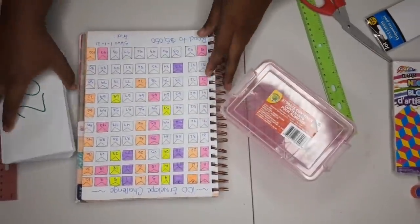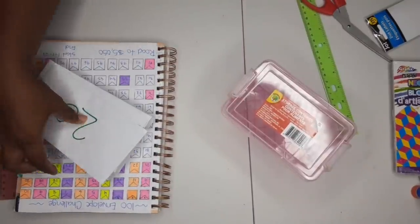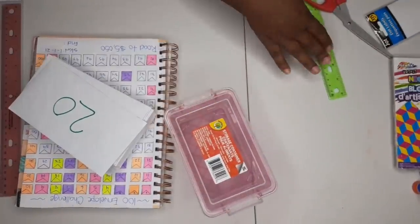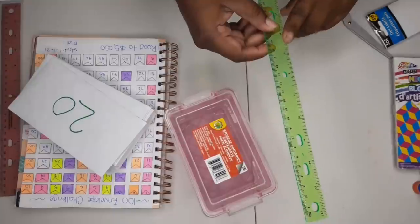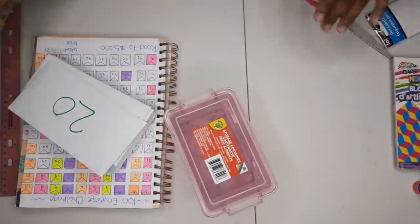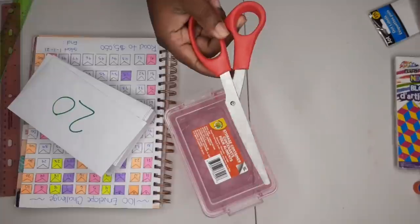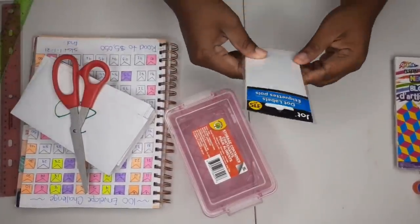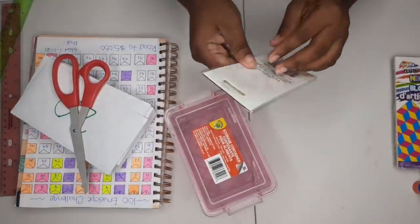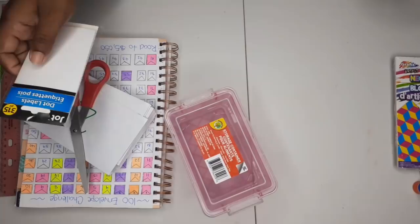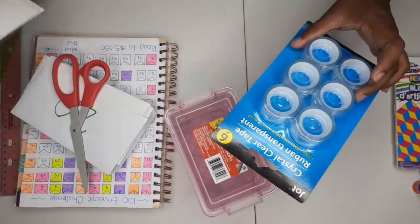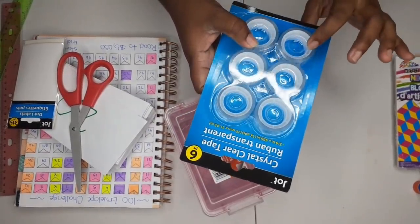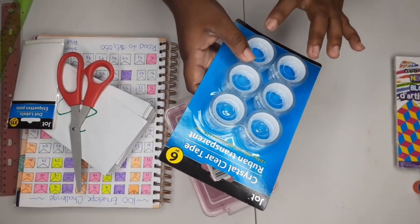So everything that I got is from Dollar Tree. What you're going to need is a container like this. You're going to need a ruler also from Dollar Tree, there were three for a dollar. Scissors, got it from Dollar Tree. But I'm pretty sure everybody has a ruler. And then these dot labels, and they're just to put our numbers on it. Some clear tape. And I wish I went to two different Dollar Trees and I could not find the big ones, so I'm just going to use this. But the bigger ones are better.